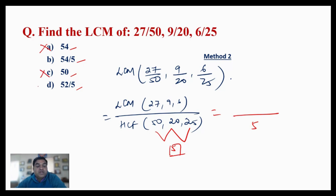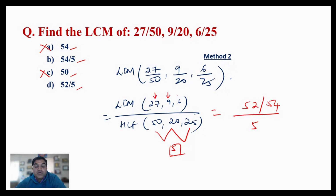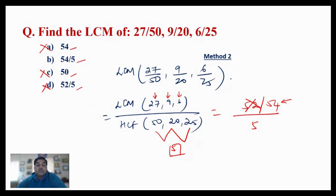Since the denominator is 5, options without division by 5 are eliminated. Now between numerators 54 and 52: the LCM of 27, 9, and 6 must be a multiple of all three. Since 27 × 2 = 54 and 54 is divisible by 6, 54 is correct — not 52. So 54/5 is the right answer.